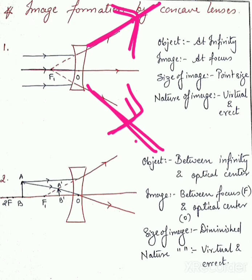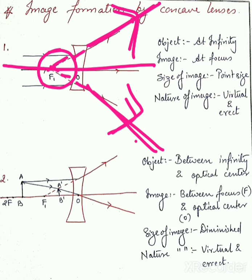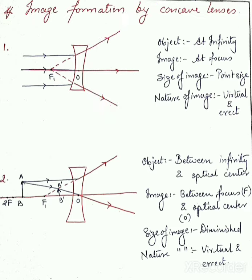Since the refracted rays are never going to meet in the forward direction, to obtain the position of the image we elongate these refracted rays in the backward direction. When we elongate them backward, we get an intersection point on the principal axis at focus. So the image is formed at focus, and from the ray diagram, the size of the image is point-sized.